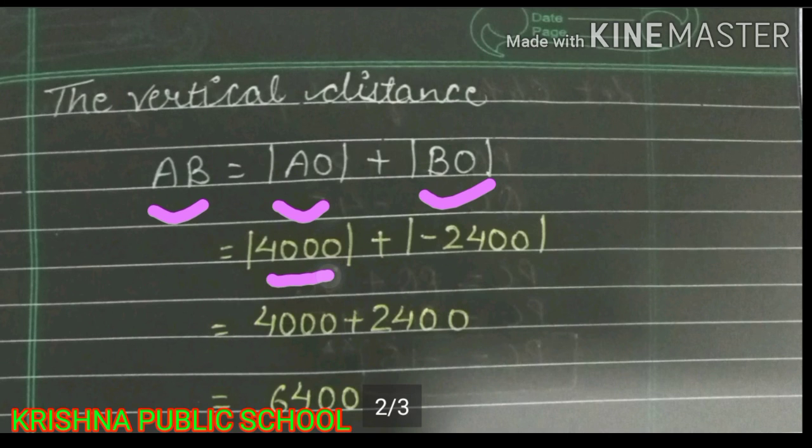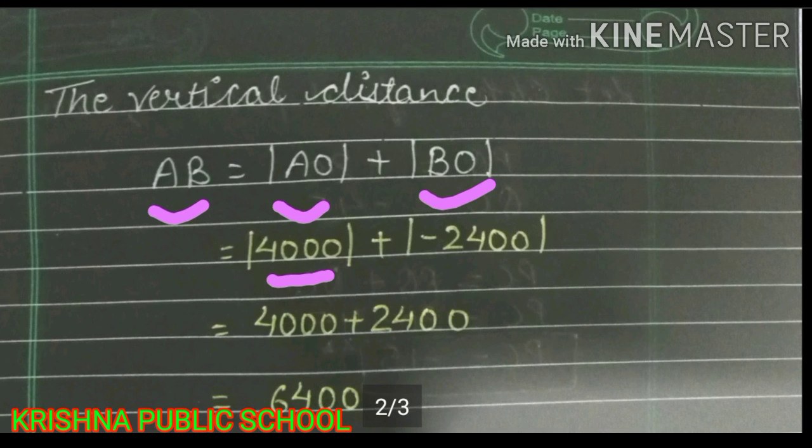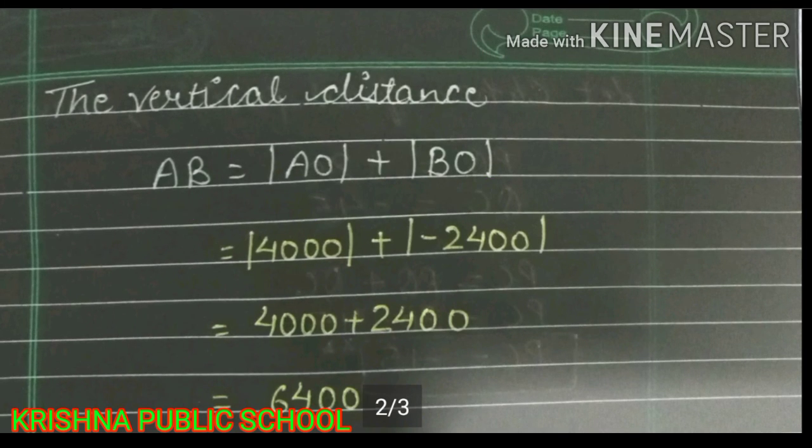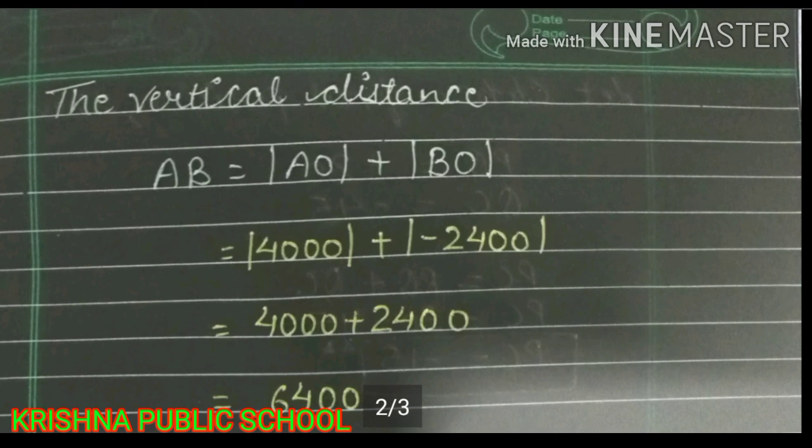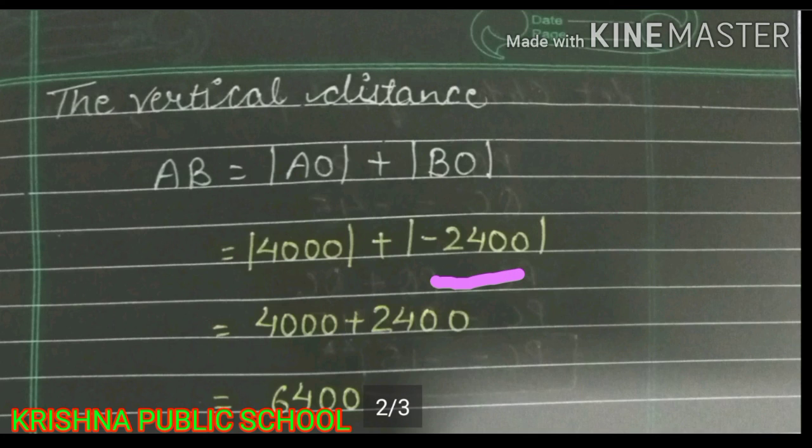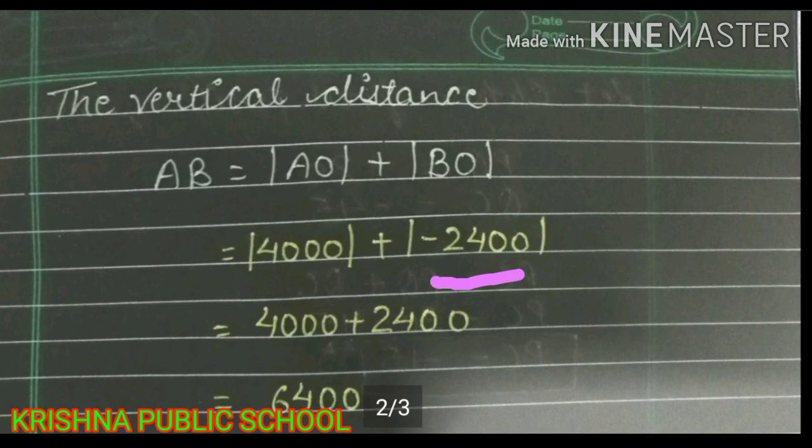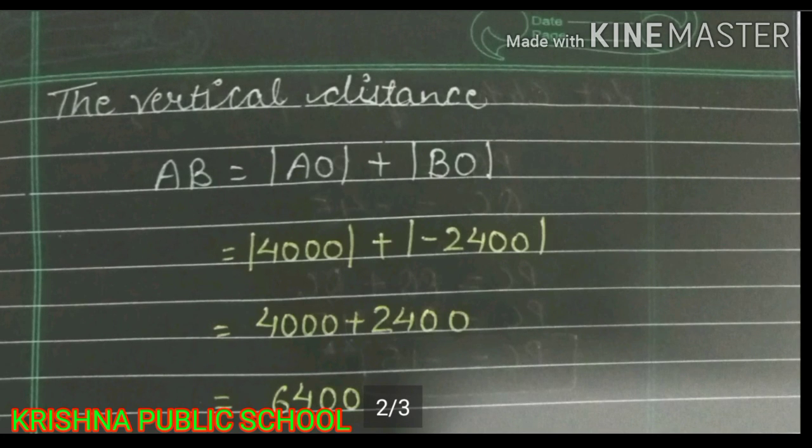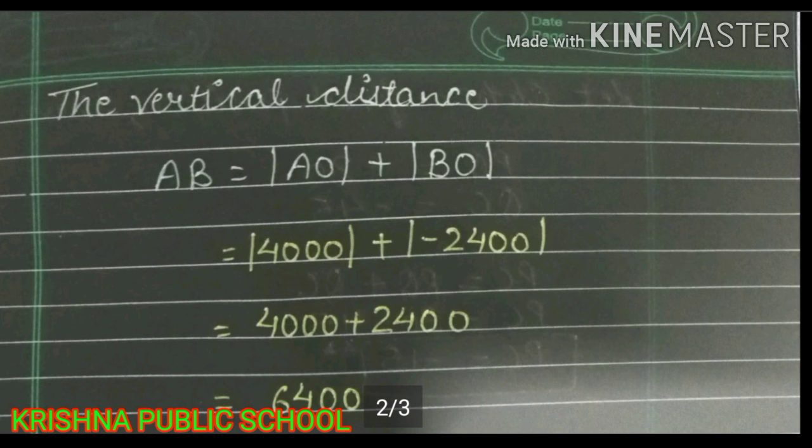Now we have two distances. Cloud is 4000 meters and submarine is 2400 meters. Now when we find the distance, we avoid the negative sign. The distance is not negative.